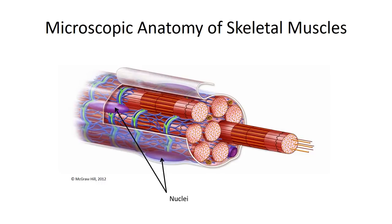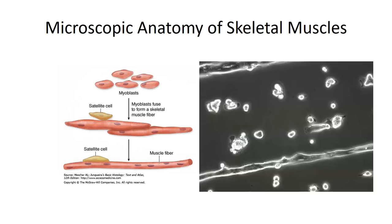This is called the myonuclear domain, and it is highly stable regardless of the fiber size. During hypertrophy, the number of myonuclei increase in proportion to the increase in cellular volume. But the question remains: how does a cell become multinucleated in the first place? To answer this, we need to dive a little bit into embryological development of skeletal muscle. Muscle develops from a collection of mesodermal stem cells referred to as myoprogenitor, or more commonly, satellite cells.